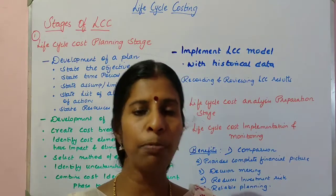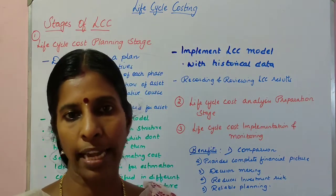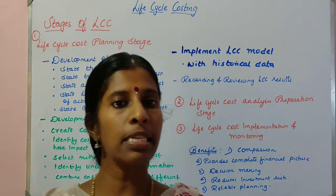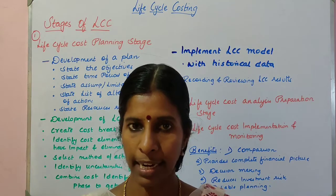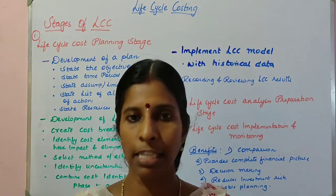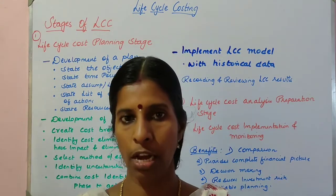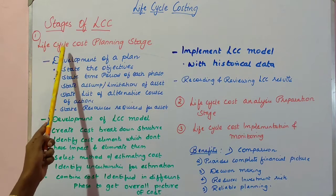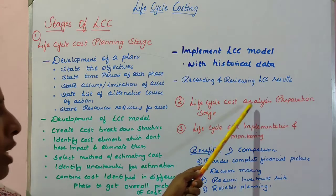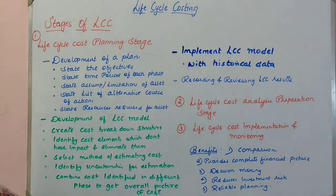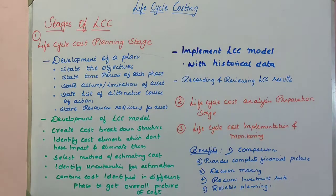The next concept is the stages of life cycle costing. Life cycle costing follows a three-stage process for use in decision making. The first is the life cycle cost planning stage. The second is the life cycle cost analysis preparation stage. The third is the life cycle cost implementation and monitoring stage.